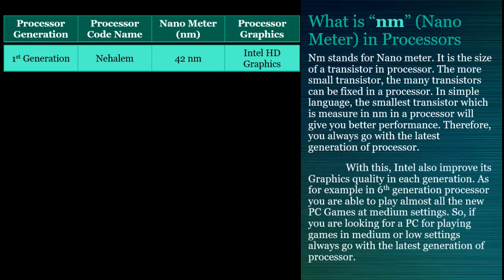Intel also improves its graphics quality with each generation of processors. For example, with a sixth generation processor you are able to play almost all new PC games at medium settings. So if you are looking for a PC for playing games at medium or low settings, always go with the latest generation of Intel processors.